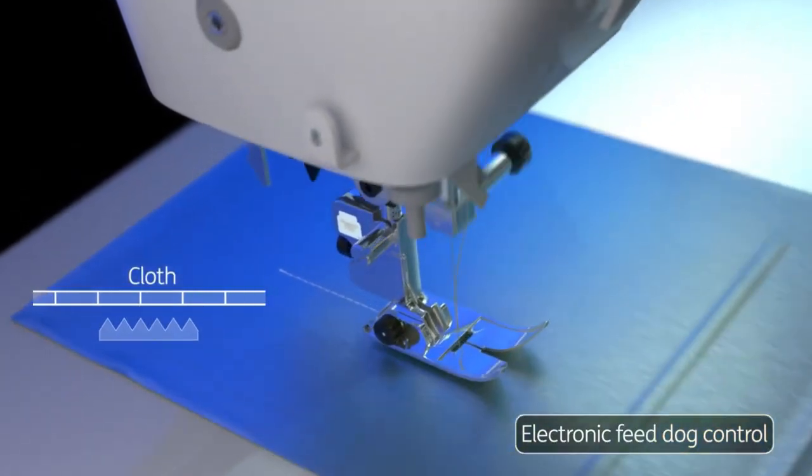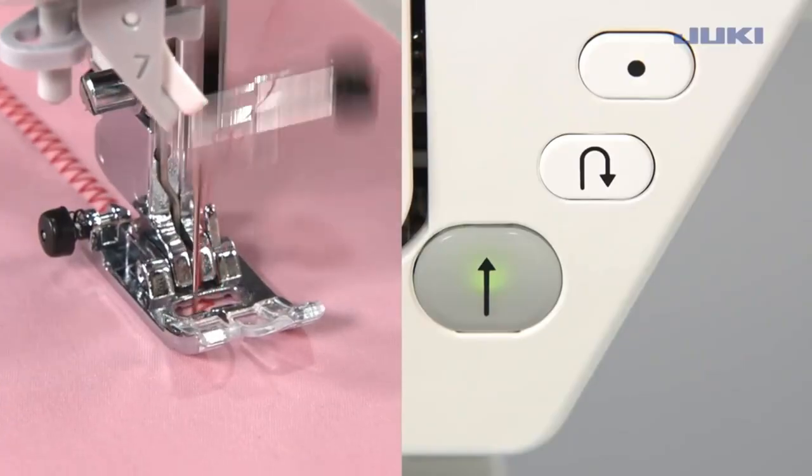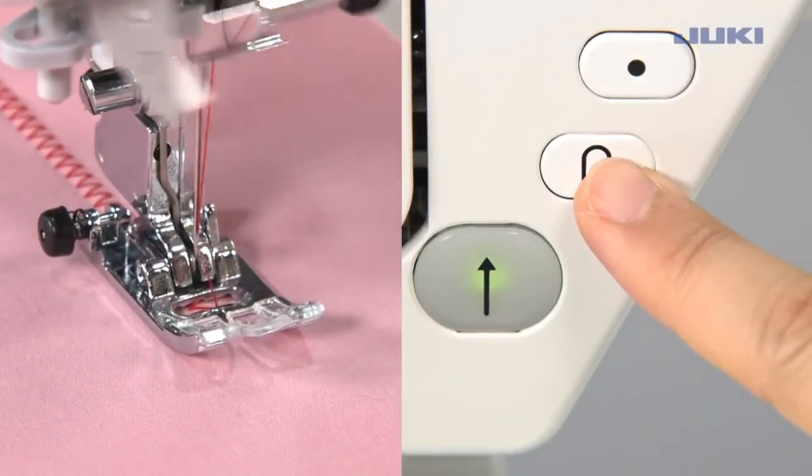It can also work as an integrated dual feed system. This feature ensures perfect sliding of both the upper and lower layers of fabric, eliminating any shifting or misalignment.